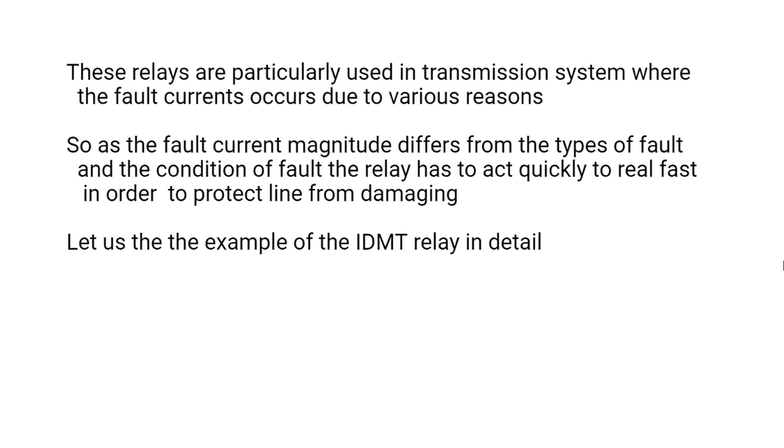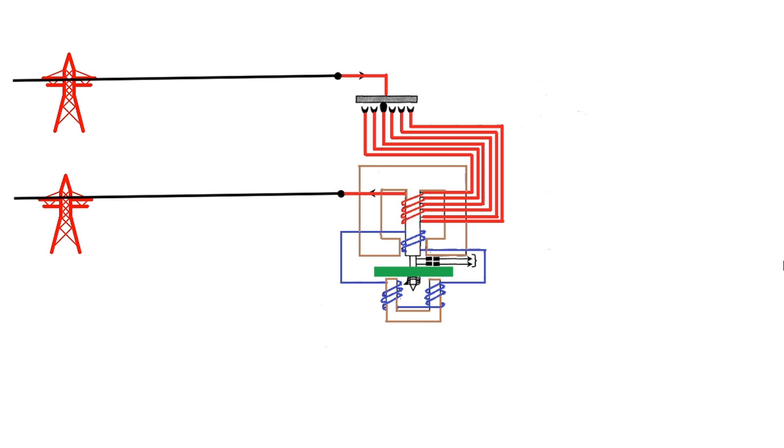Here there is a transmission system where the overcurrent occurs. The red line indicates primary circuits, blue line indicates secondary circuits, and green indicates the disc.